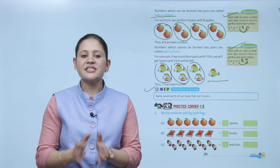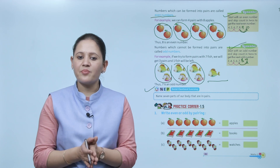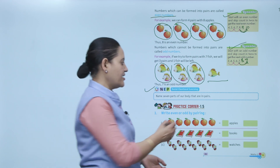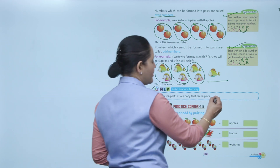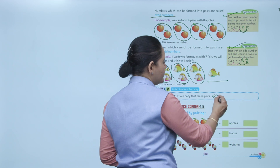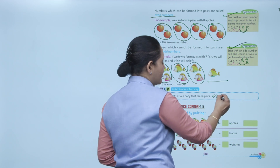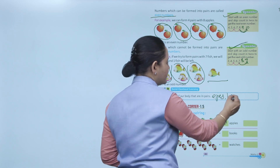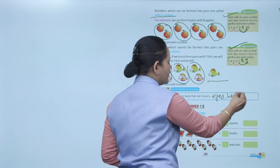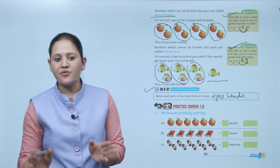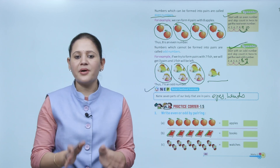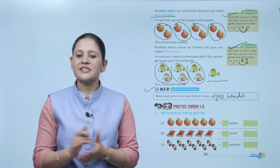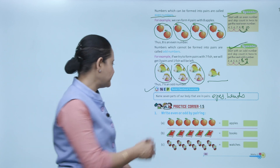Next: Social Emotional Learning. Name seven parts of our body that are in pairs — like eyes, hands, legs. Like this, you have to write seven body parts which are in pairs.